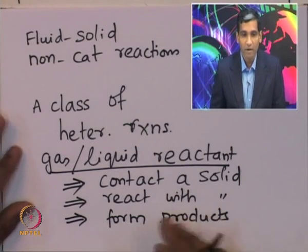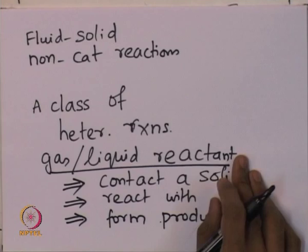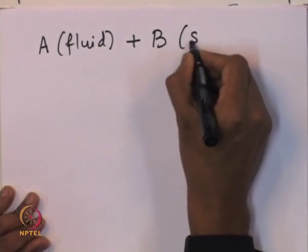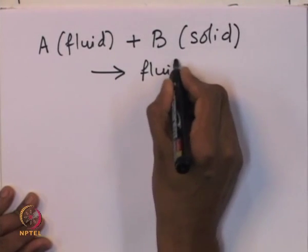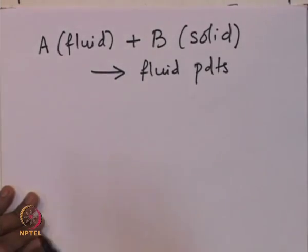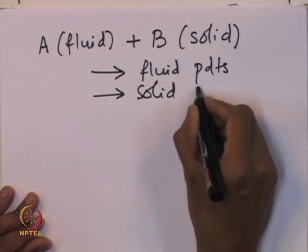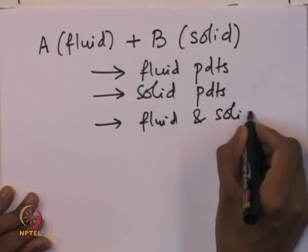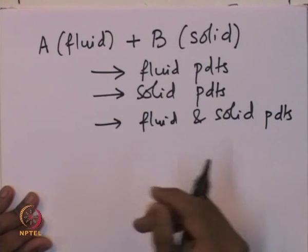This is very common in many industrial settings. If we consider the general reaction where fluid A reacts with solid B, there are various possibilities: the product might be a fluid product, or it might form a solid product, or it might form a combination of fluid and solid products together.